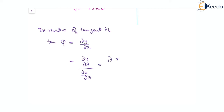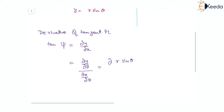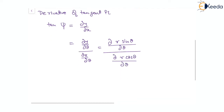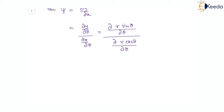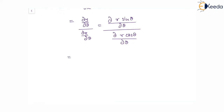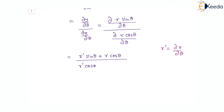This becomes d(R sinθ)/dθ in the numerator and d(R cosθ)/dθ in the denominator. Since both R and sinθ (and cosθ) are functions of θ, we apply the product rule. The numerator gives R' sinθ + R cosθ, and the denominator gives R' cosθ − R sinθ, where R' denotes dR/dθ.